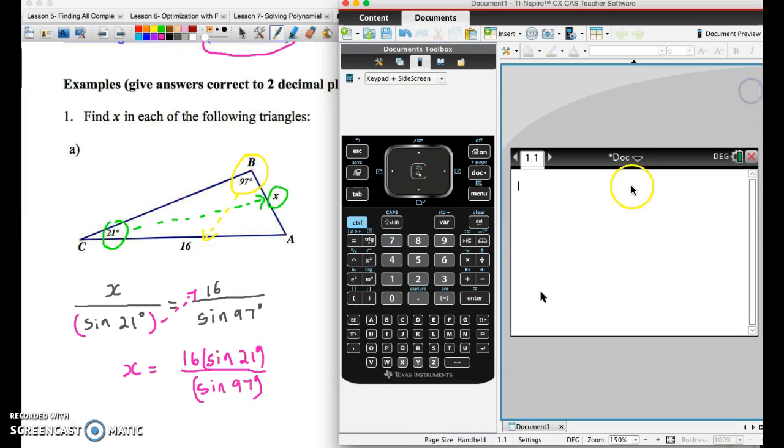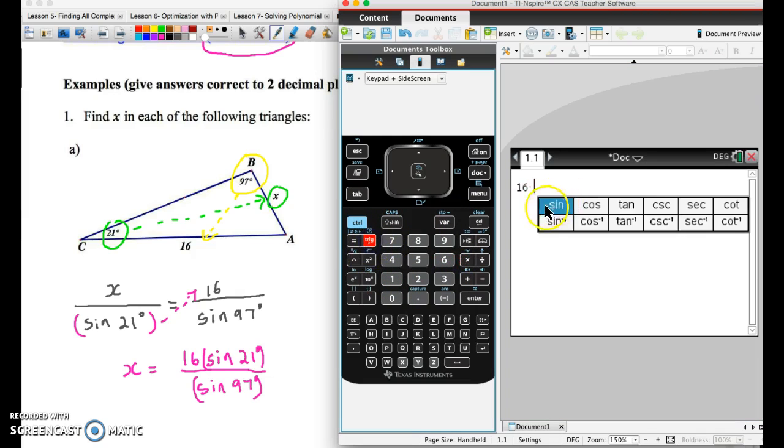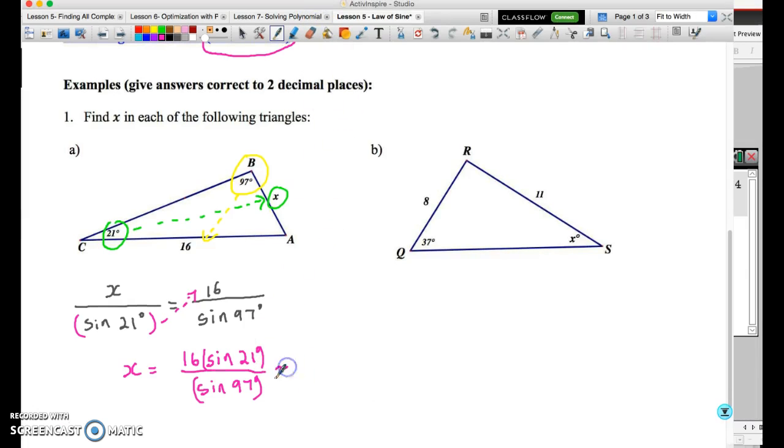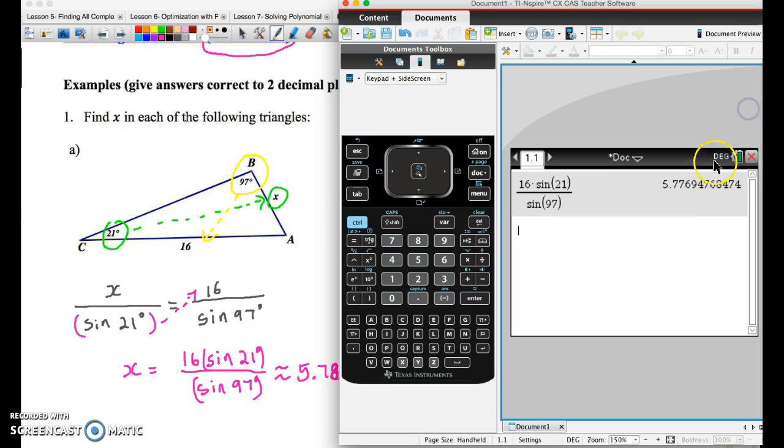Those are mathematical operations and you cannot cancel them. You must treat sine of 21 and sine of 97 as numbers. Now we're going to do that on the calculator. So all I need to do is do 16 multiplied by, open the trig function, sine of 21 degrees, go outside the parentheses, divide. And now I'm going to divide by sine of 97. And my answer 5.78, correct to two decimal places. So that's going to be approximately 5.78.